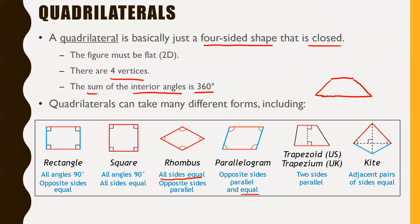The last one is a kite. A kite says the adjacent pairs of sides are equal — so these two sides would be equal because they're right next to each other, and then the other two sides would also be equal. What's usually important about kites is that you can break it down into a bunch of little triangles. The triangles formed are congruent to each other, just flipped around, making it really useful to solve them.